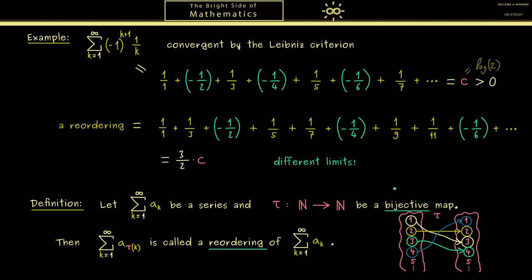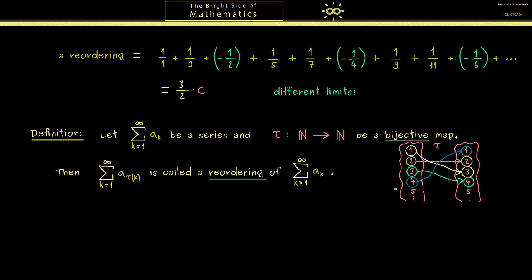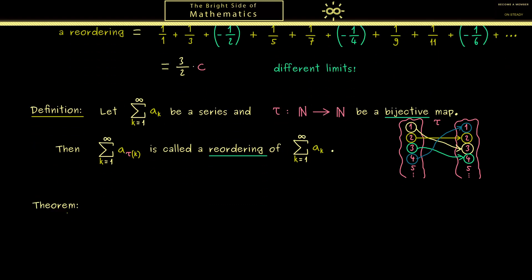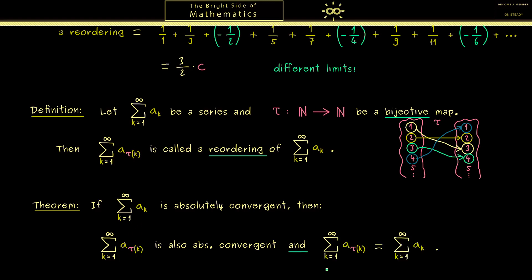By having this, let's formulate the theorem for this video today. As promised, it's about absolutely convergent series. If we have such a series, then we know that any reordering is also absolutely convergent. And more importantly, the values, the limits, are the same. In other words, such a strange thing as before can't happen here. And indeed, this nice result holds for any reordering.